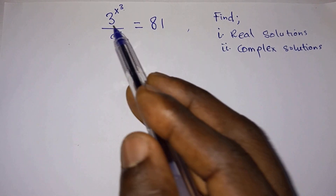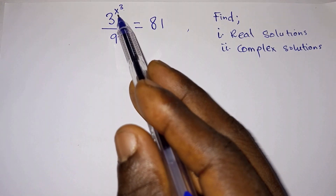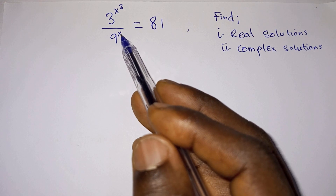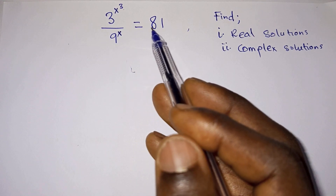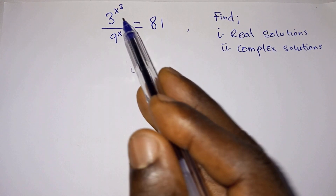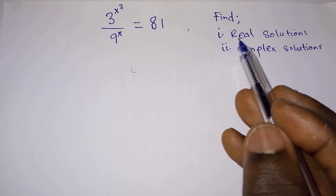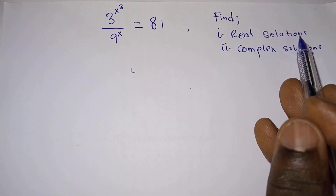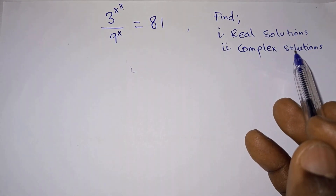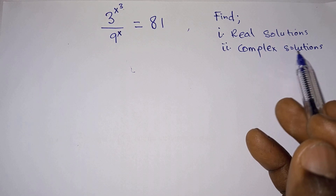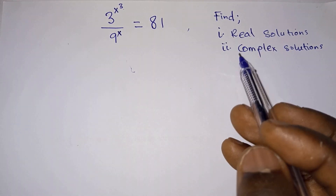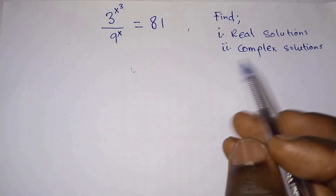Hello. We are given 3 to the power x to the power 3, divided by 9 to the power x, is equal to 81. We have to find the values of x where in part i, x is a real number, and in part ii, x is a complex number. We will find the real solutions and then the complex solutions all in this video.